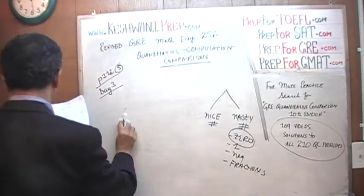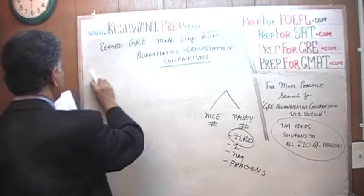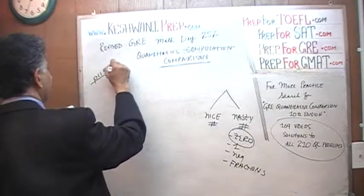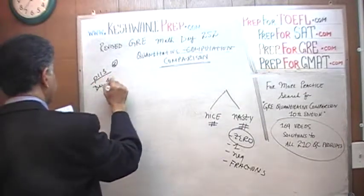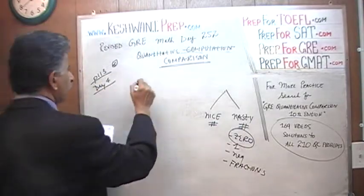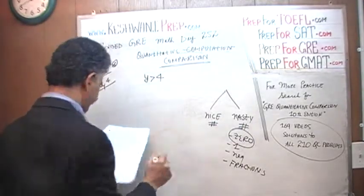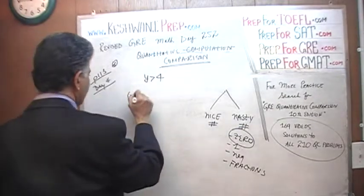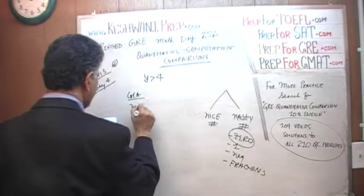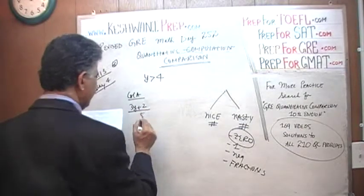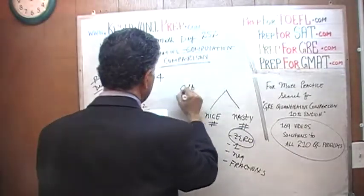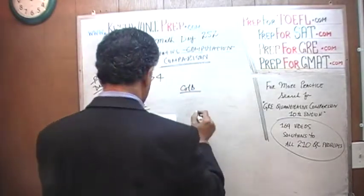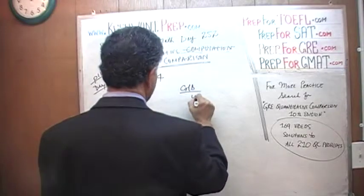Next — page number 113, number 6, something we did on day number 4. We are told that y is more than four. Here is column A, which is three y plus two over five, and column B, which is just y.